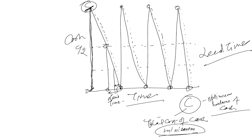Therefore, C is the optimum cash balance — the point where holding cost and transaction cost intersect and the total cost is minimized. The firm keeps C amount of cash, uses it down, then replenishes by selling marketable securities, repeating the cycle. This is how the concept of EOQ from inventory management is applied to managing cash balances in Baumol's certainty model.